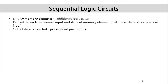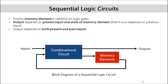As discussed in the previous lecture, sequential logic circuits employ memory elements in addition to logic gates, and the current output depends both on the present as well as past inputs, because the output depends on the present input and the state of the memory element that in turn depends on the previous input. So the block diagram of a sequential logic circuit has inputs being fed into a combinational circuit, and sequential logic circuits employ feedback.